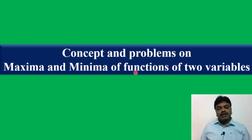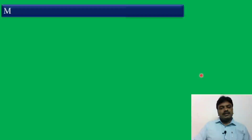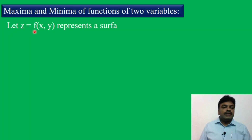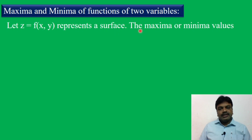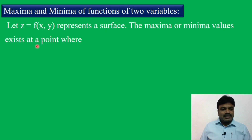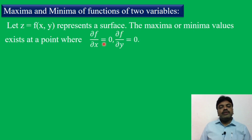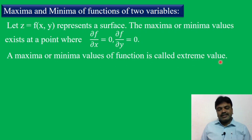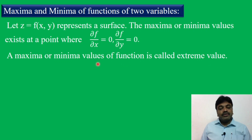Maxima and minima of a function of two variables. Let z = f(x,y) represent a surface. The maxima and minima values exist at a point where ∂f/∂x = 0 and ∂f/∂y = 0. The maxima or minima values of a function are called extreme values.